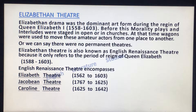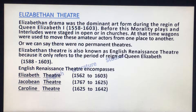Before talking about theatre, I will try to give a short view of Elizabethan drama, because drama is concerned with theatre. Elizabethan drama was the dominant art form during the reign of Queen Elizabeth I. Before this, morality plays and interludes were staged in the open or in churches. At that time, wagons were used to move these amateur actors from one place to another — there were no permanent theatres at that time.